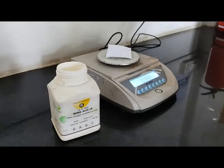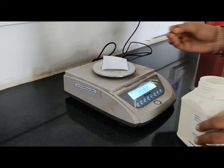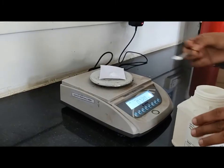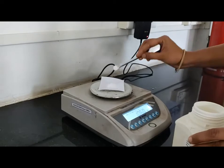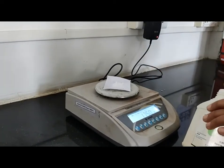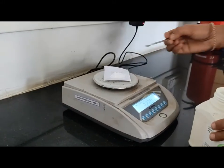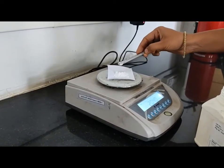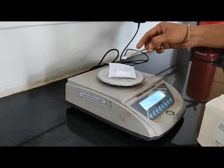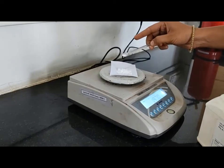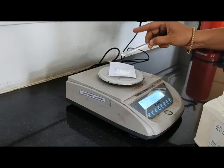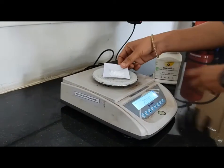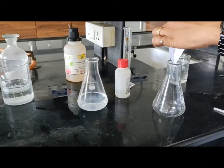Now let's start the assay. For that, we require 2 grams of boric acid. Add this 2 grams of boric acid into 250 ml conical flask.